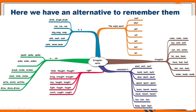In the blue branch, we have verbs that change the vowel in the base form to an 'A' in the past simple. For example, 'drink' — beber — has an 'I,' and in the past that 'I' changes to 'A': 'drank.' Similarly, 'sing' — cantar — becomes 'sang,' and 'swim' — nadar — becomes 'swam.' Did you see? The vowel in the base form changes to an 'A' in the past simple — easy to remember.